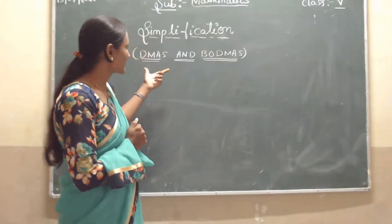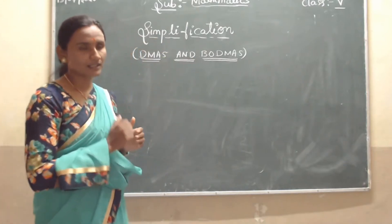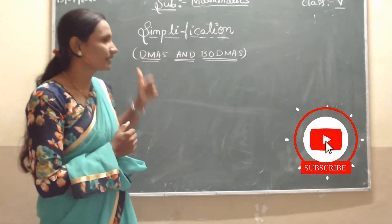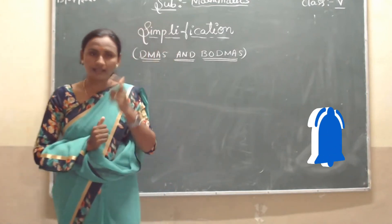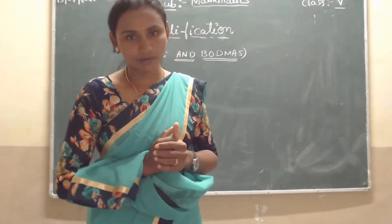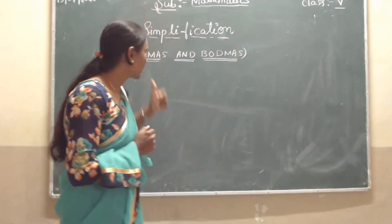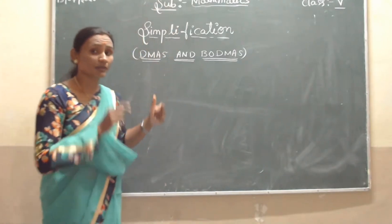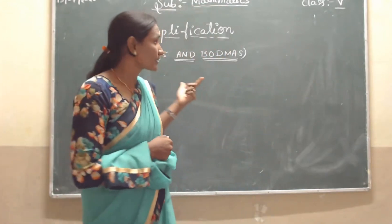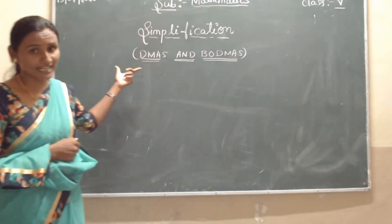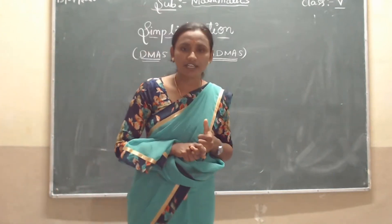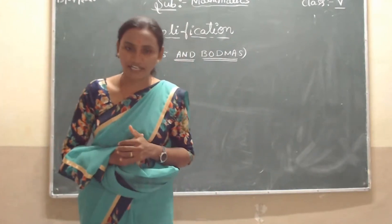Simplification. So DMAS and BODMAS. Students, do you know the full form of DMAS and BODMAS? First, tell me the full form of DMAS. What is the full form of DMAS? Children, full form of DMAS: D for Division, M for Multiplication, A for Addition, S for Subtraction.